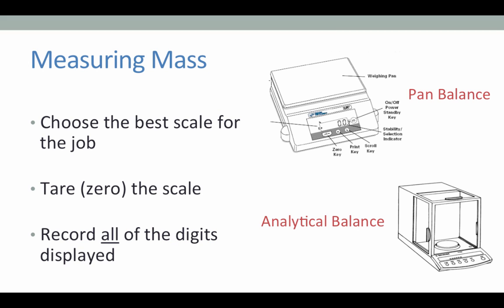When measuring mass or conducting any sort of scientific measurement, it's important to use the right tool. And so we want to make sure we're using the best scale for the job. In the Chemistry 1A laboratory, we have two types of scales available. We have the pan balance, pictured at the top, and the analytical balance, pictured at the bottom.